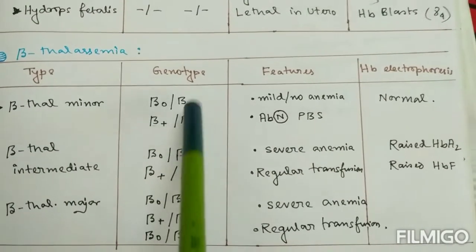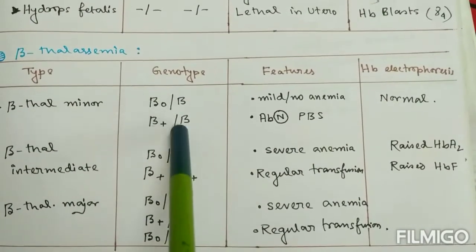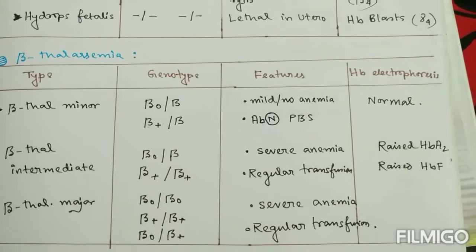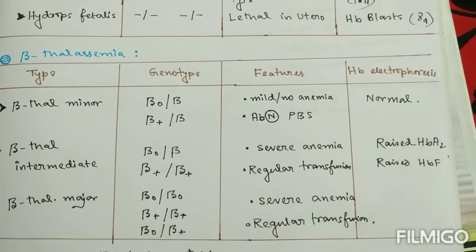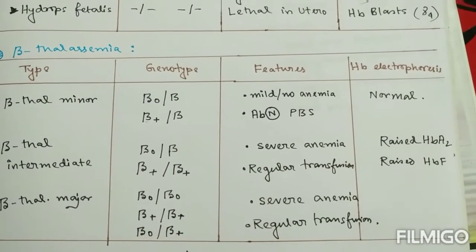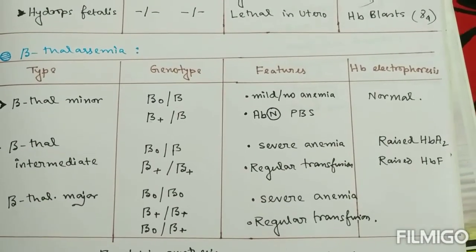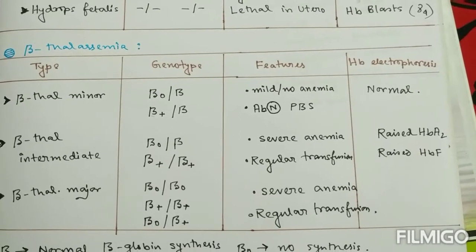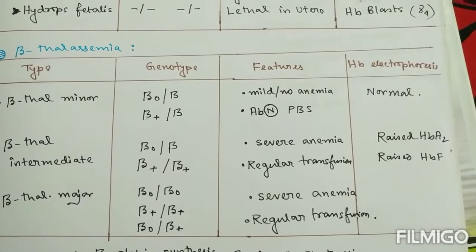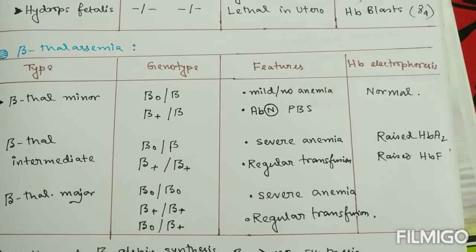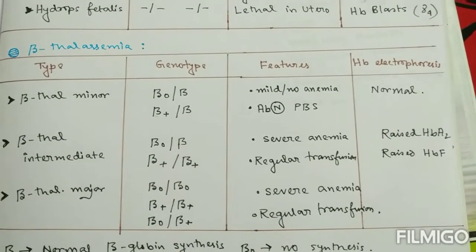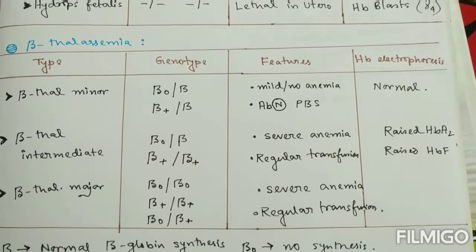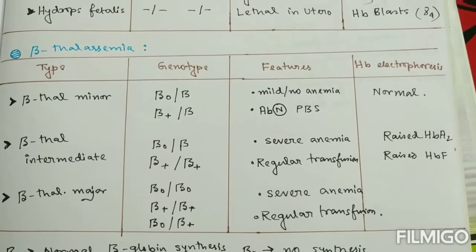In beta thalassemia minor, the genotype is either beta-zero/beta or beta-plus/beta, and the features are mild or no anemia with some peripheral blood smear abnormalities. Hemoglobin electrophoresis is almost normal.